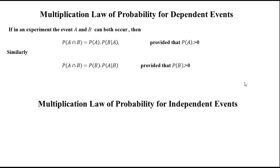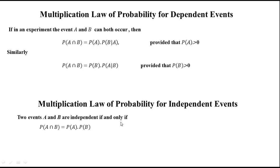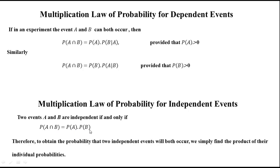Now we come to the multiplication law of probability for independent events. Two events A and B are independent if and only if P(A∩B) = P(A) · P(B). Therefore, to obtain the probability that two independent events will both occur, we simply find the product of their individual probabilities.